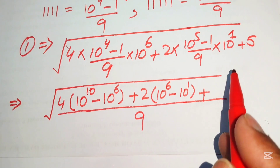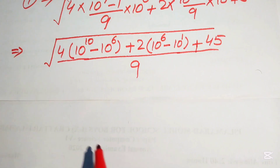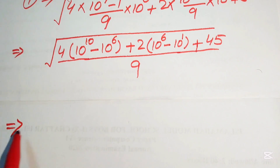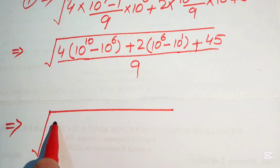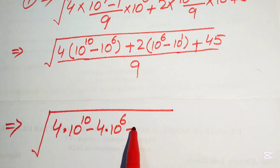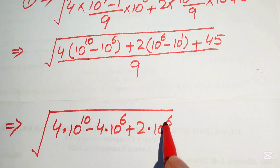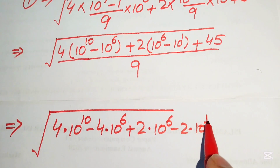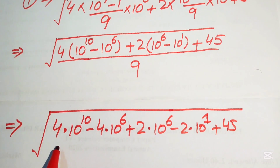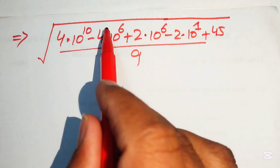Multiplying out: we get square root of [4 × 10^10 − 4 × 10^6 + 2 × 10^6 − 2 × 10^1 + 45], all divided by 9.